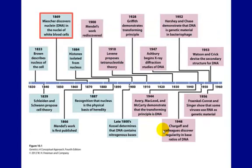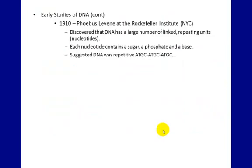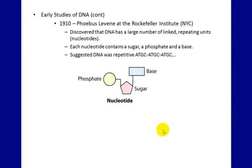In 1910, Phoebus Levine at the Rockefeller Institute figured out that the nucleotide was composed of three different molecules — the sugar, the base, and the phosphate. He also suggested that DNA had some type of repetitive sequence. He thought it would be A, C, T, G, A, C, T, G repeating. So he figured out something important about DNA.